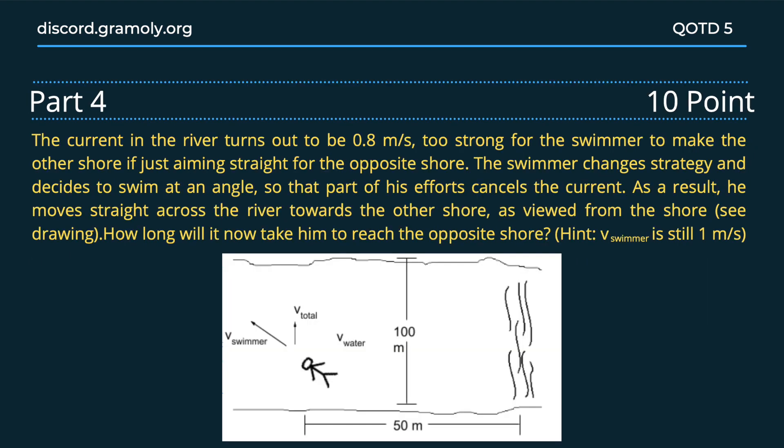And for the final part: the current in the river turns out to be 0.8 meters per second, which is too strong for the swimmer to make the other shore if just aiming straight there. The swimmer changes strategy and decides to swim at an angle so that part of his efforts cancels the current. As a result, he moves straight across the river towards the other shore. How long will it take him to reach there now?